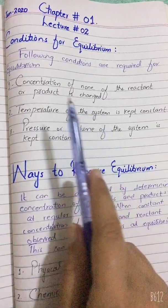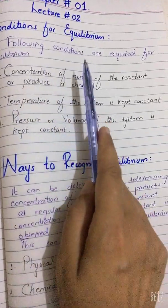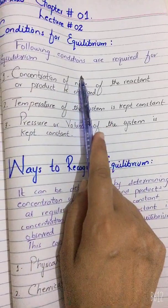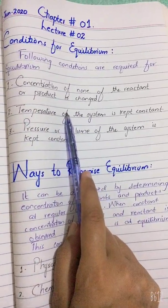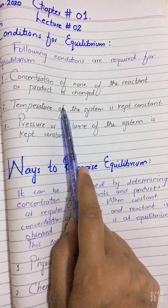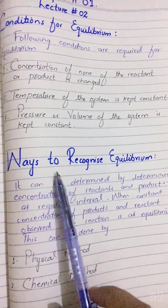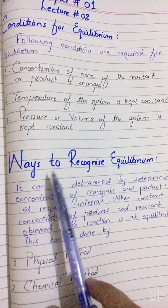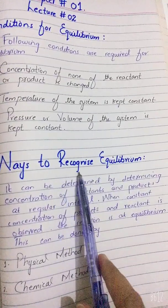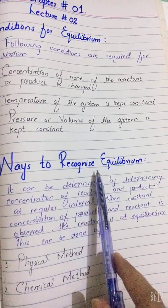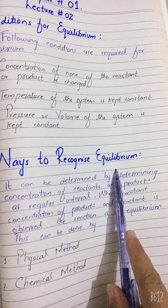If you disturb any of these conditions, the whole equilibrium will be disturbed and your equilibrium constant will be disturbed. Next, we are going to identify the ways to recognize equilibrium — how can you recognize that equilibrium has been achieved or not?